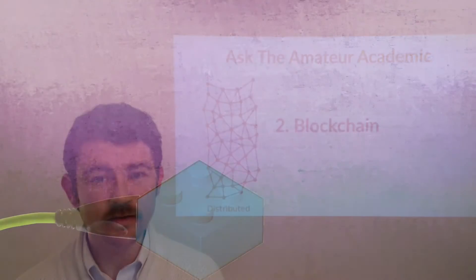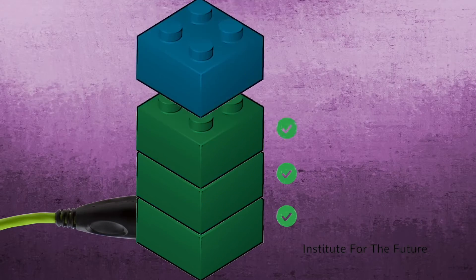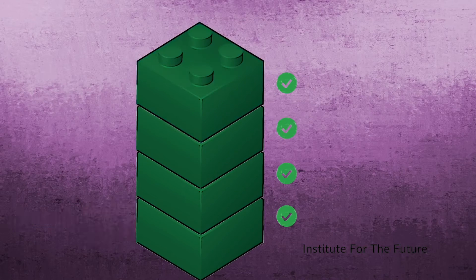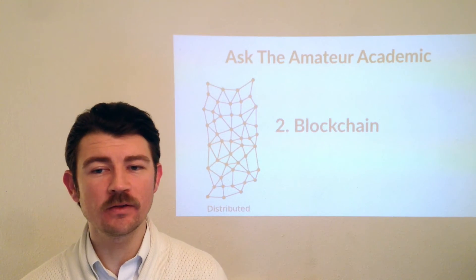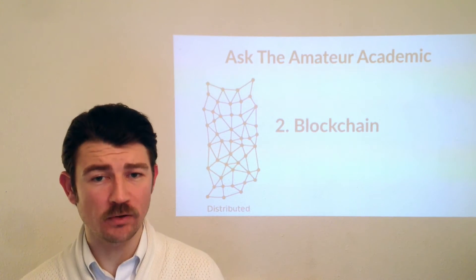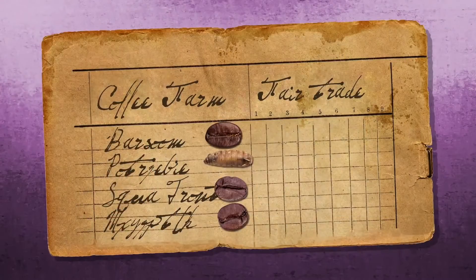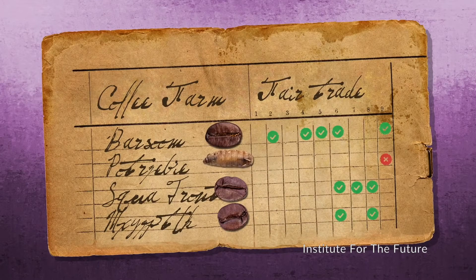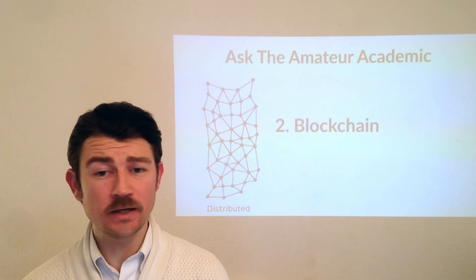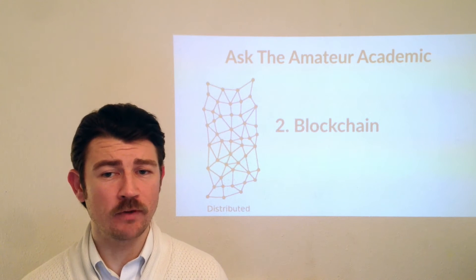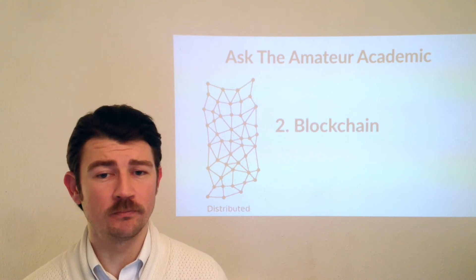The blocks also contain a reference to the previous block. The contents of the blocks are public. They can contain a ledger of transactions like with cryptocurrency, and they can be used for managing any type of trusted record of events or people.